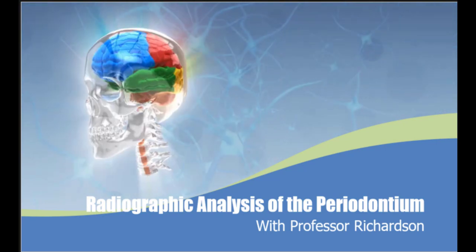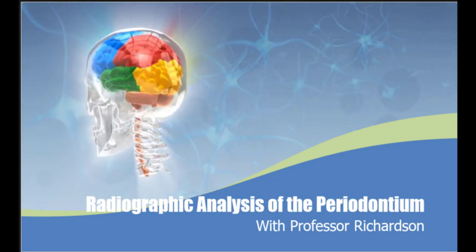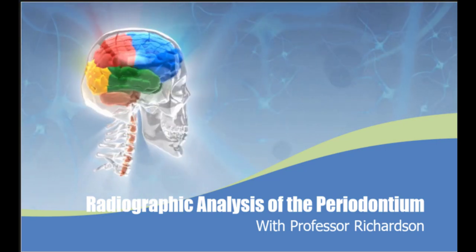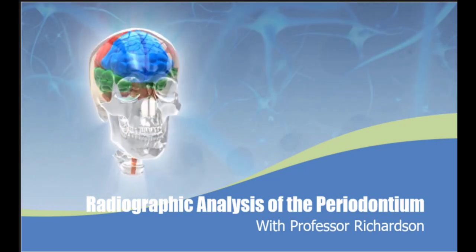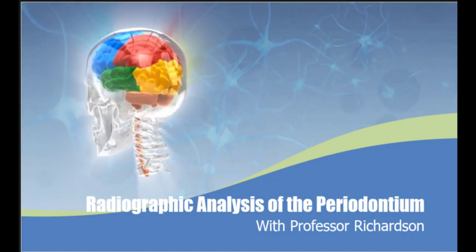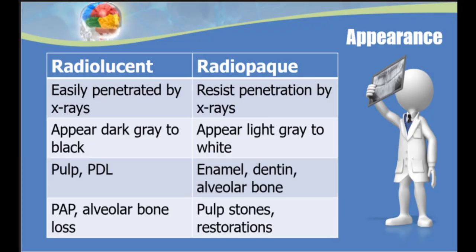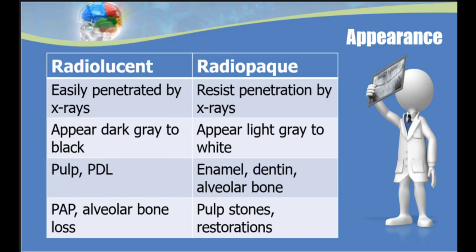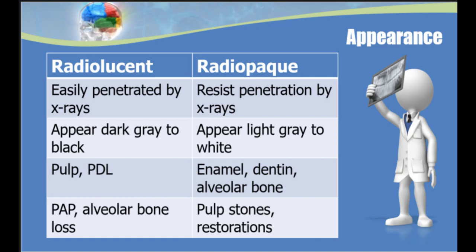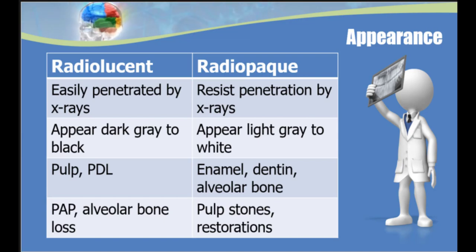In this lecture I'll be discussing normal periodontal anatomy on radiographs and assessment of the periodontium with radiographs. Before we can identify abnormal structures or tissues on a radiograph, we first have to have a solid foundation in how normal appearances of the periodontium present. As a review, let's talk about some of the features of radiolucent versus radiopaque structures.